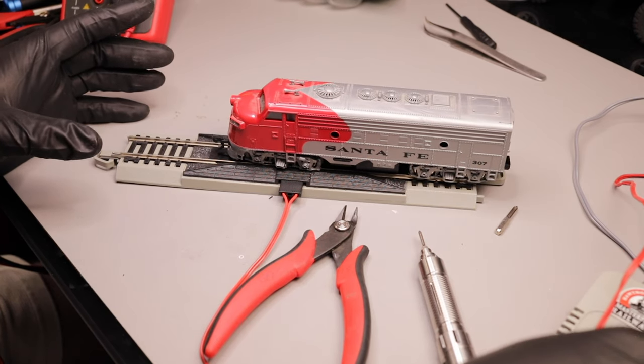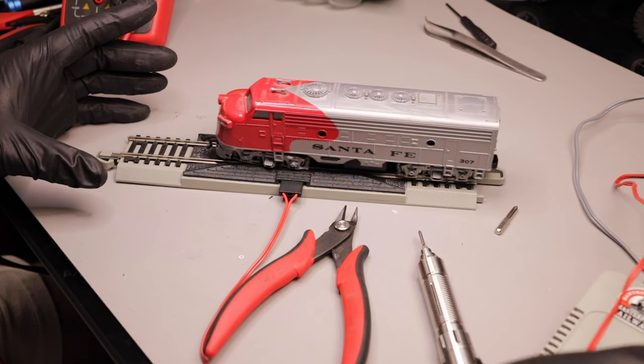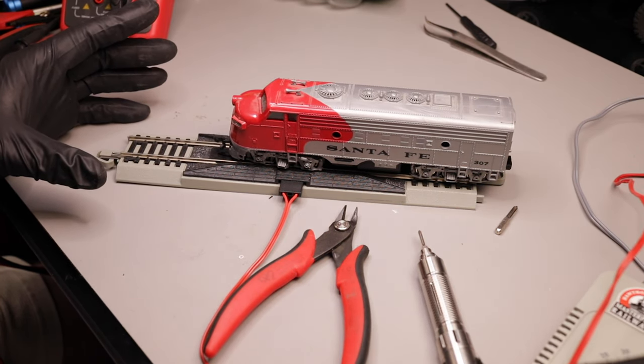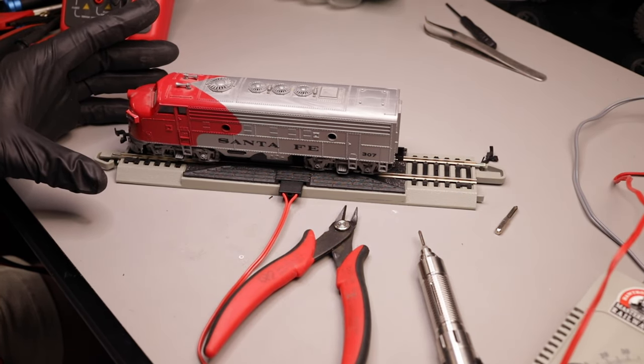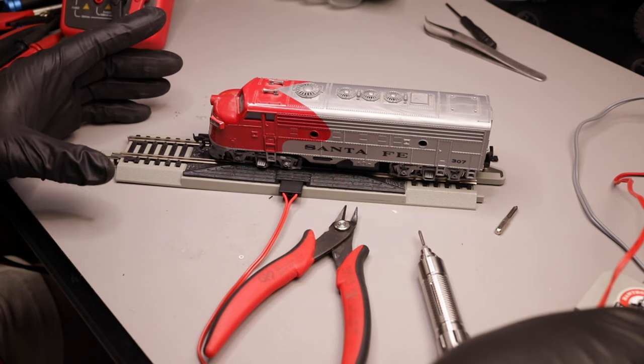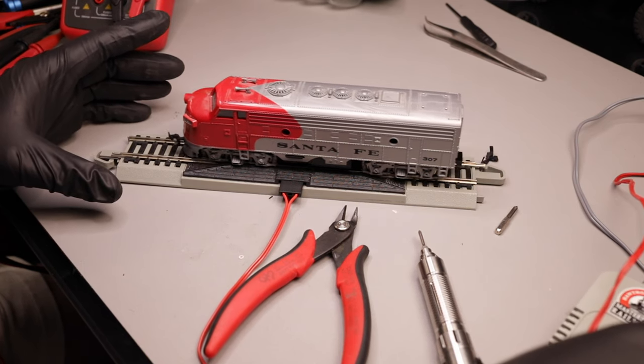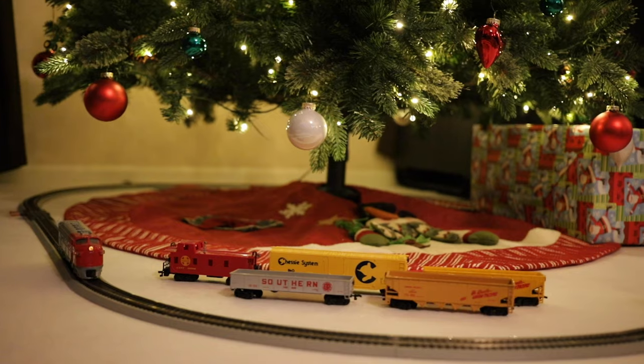Hopefully this helps someone else if you have an old DC powered train or even a new DC powered train. They're all basically the same. They're very simple circuits. There's nothing to them, and generally if the motors are bad, it's going to be probably one of the issues that I talked about.